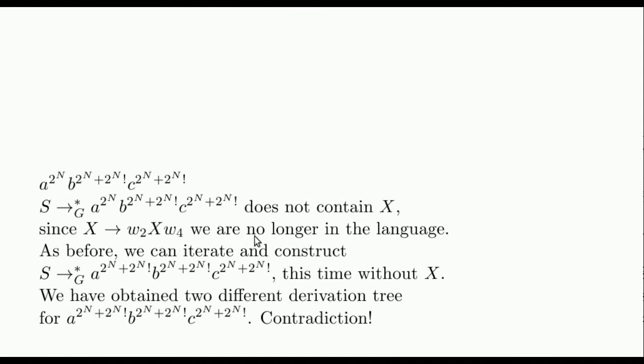If we proceed analogously to the previous word, we can iterate one of its subderivations until we obtain again a derivation of this word. But in this case, the variable X does not appear in the derivation. Thus, the current derivation tree is different from the one obtained before for this same word.